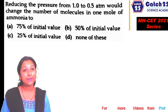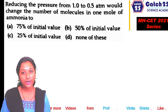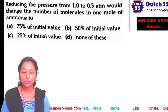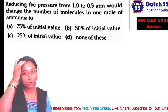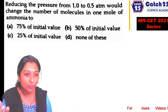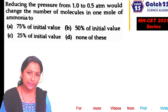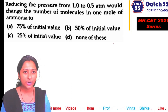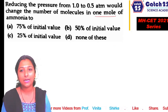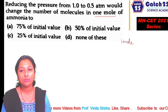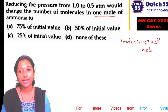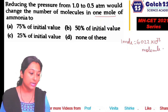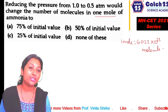Next question: Reducing the pressure from 1 to 0.5 atmosphere — would this change the number of molecules in 1 mole of ammonia? Pressure changes, but the moles remain 1 mole. 1 mole always contains 6.022 × 10²³ molecules, so the number of molecules will not change.